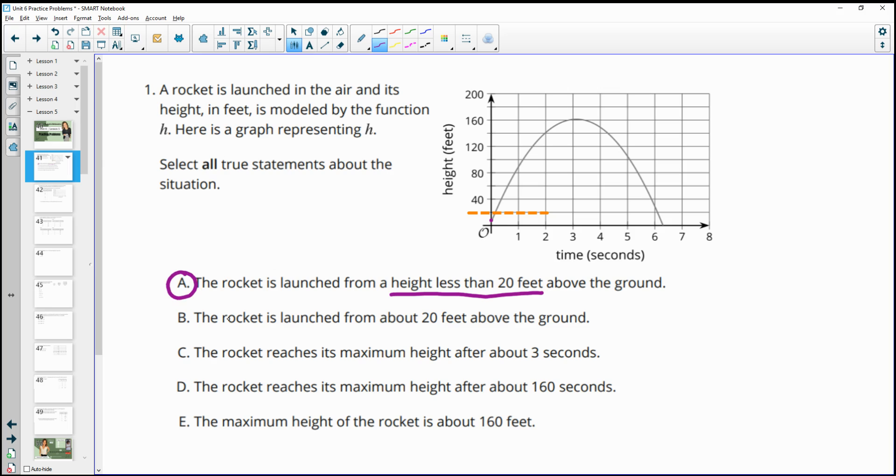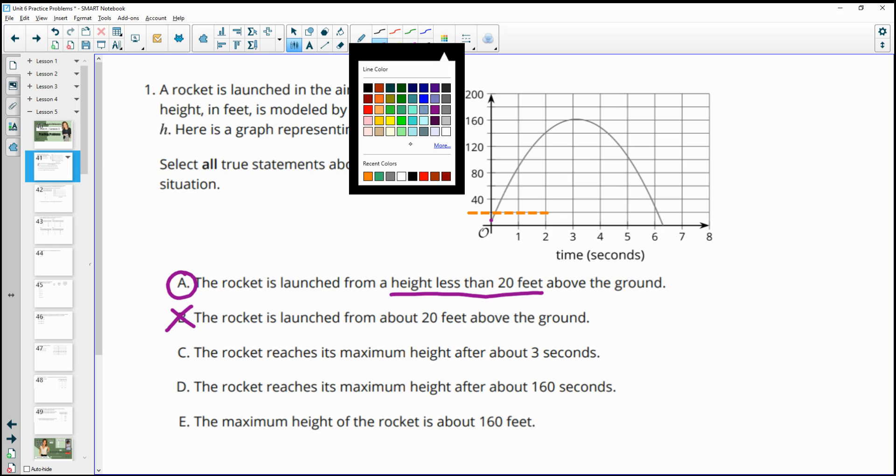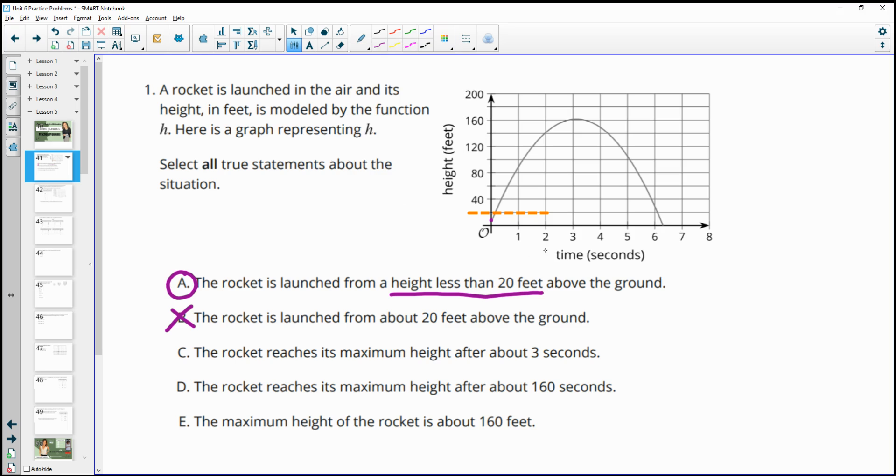B says the rocket is launched from about 20 feet above the ground, which is false because it's certainly below that. It's probably about 10 feet. C says that the rocket reaches a maximum height after about three seconds. So the time is our horizontal. We want to look here at three seconds. Is that about the maximum? And that's true.